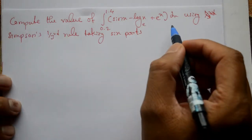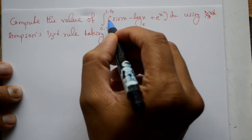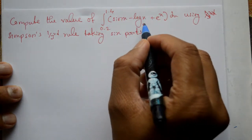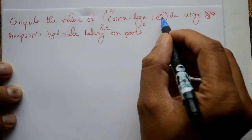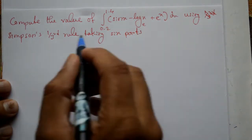Welcome friends. This problem is solved. Compute the value of integration from 0.2 to 1.4 of the function sin x minus log x to the base e plus e raise to x with respect to x using Simpson's one third rule taking 6 parts.